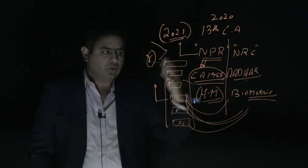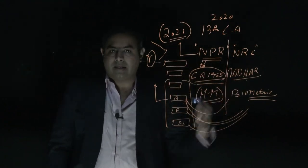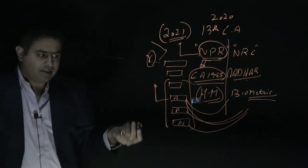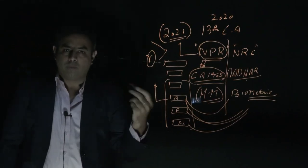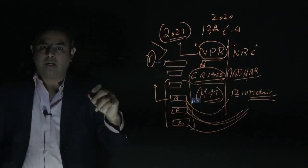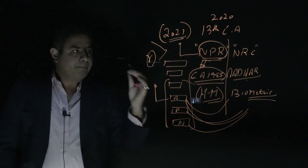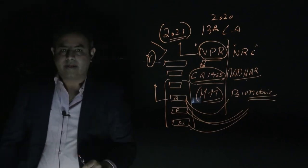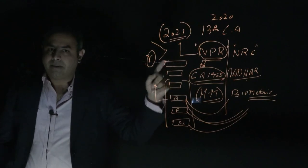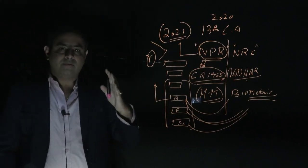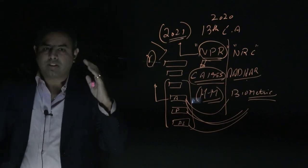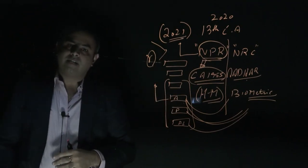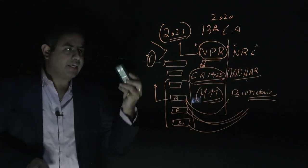What is the utility of NPR? When we have Aadhaar data, the NPR data gives much more information — it asks for your driving license, Aadhaar, PAN card, and occupation. If a poor person has no job and the government wants to support him, NPR data will help the government. Subsidies will be better targeted, governance will improve, and government resources will not be wasted. This is the logic behind conducting NPR.